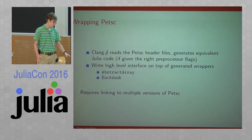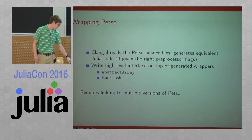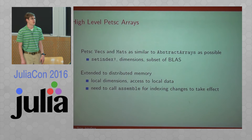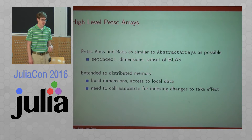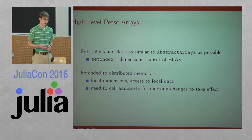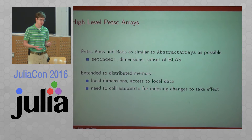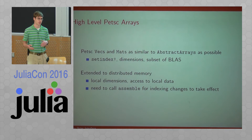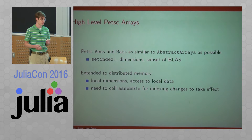The good news is this should be transparent to the user — everything should just be routed correctly. Looking at the abstractions: for abstract array, PETSc defines a Vec and a Mat type, and the high-level wrappers make these as close to being abstract arrays as they can be. They support setindex like a regular array, you can get information about the dimensions, and they even support a subset of BLAS — the alpha x plus beta y kind of stuff — but none of the factorizations, since you don't want to factor a sparse matrix if you can avoid it.